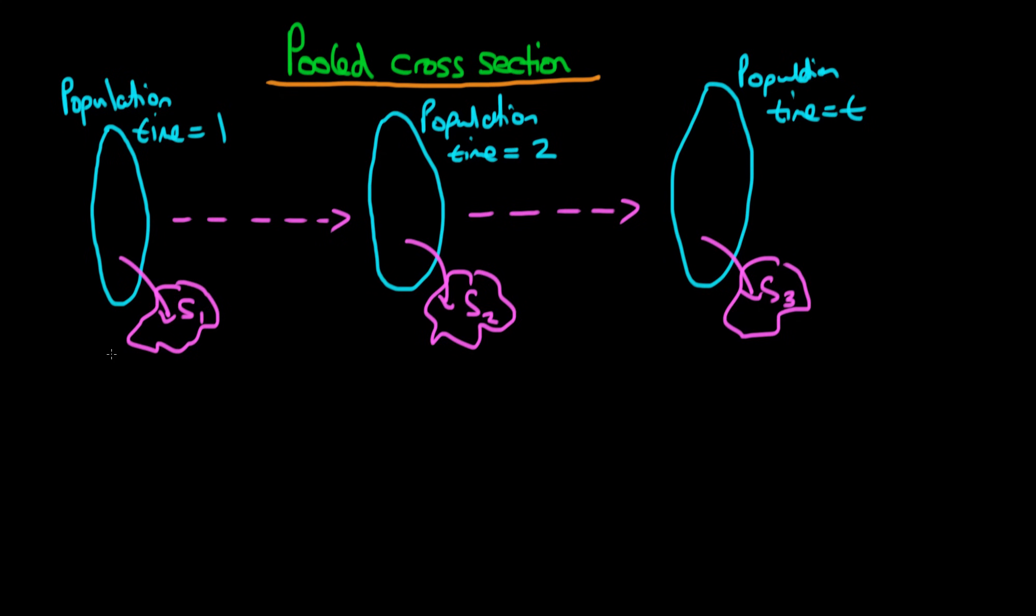This sort of model is different from any of the models you've examined thus far because, even though the observations are independent of one another—those observations in S1 are certainly independent of those in S2 and S3—the problem is we cannot assume that they are identically distributed. Essentially, the population is changing across time; individuals get older, things happen, so these populations are not the same.